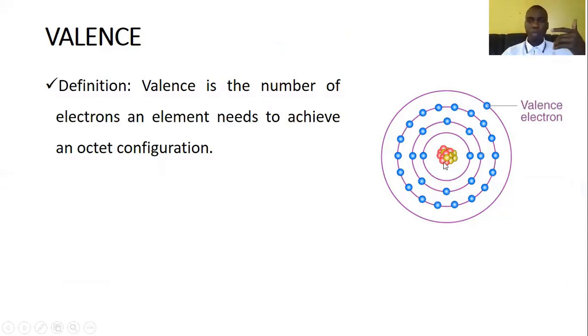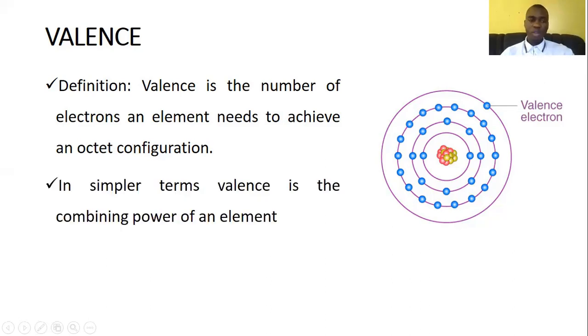So if it's not eight, then that particular element is not stable. So how many electrons it needs to reach eight is actually what we call an octet configuration. And consequently, we are defining valency as the number of electrons an element needs to achieve an octet configuration. In other words, we are saying valency is the combined power of an element.